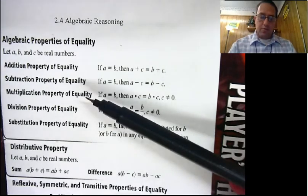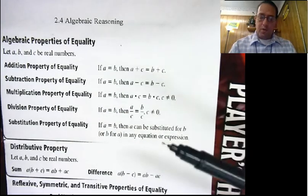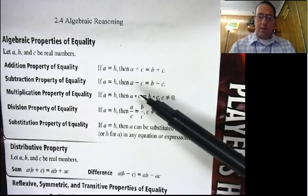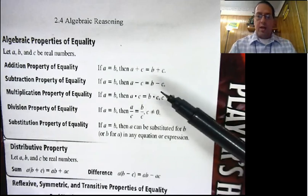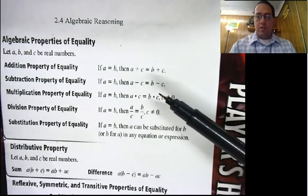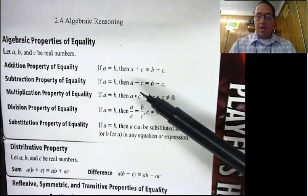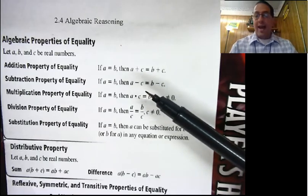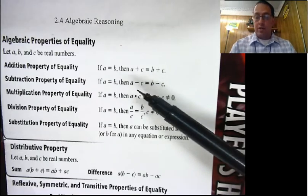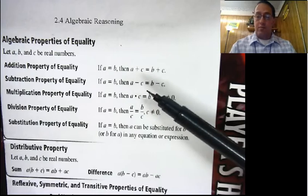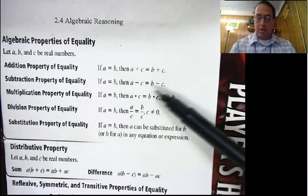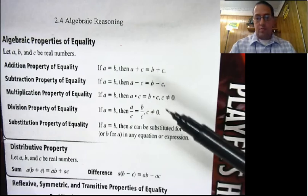Same kind of thing with the subtraction property of equality. I can subtract the same thing from both sides of my equation, and my equation is still going to be equal. If you have x plus 2 equals 5, you can subtract the 2 from both sides and it works. We've been doing that for years.